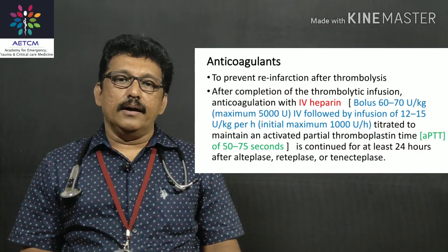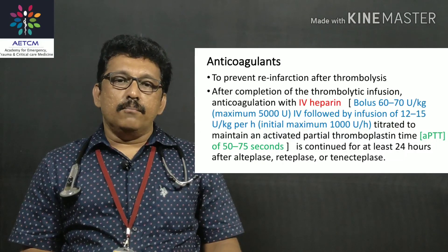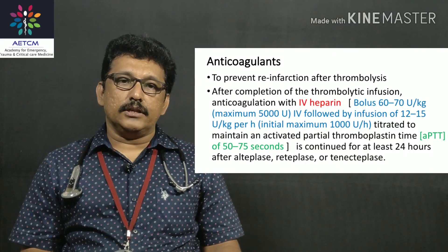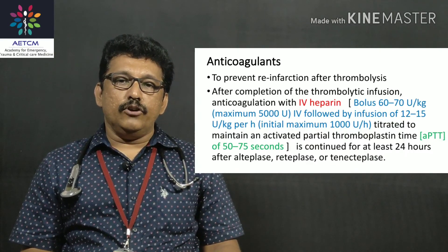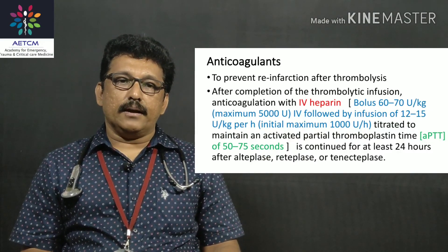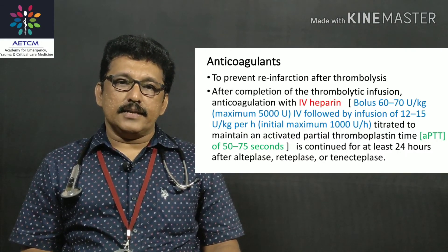Once the patient is stabilized in the ICU, give heparin to prevent propagation of thrombus and for DVT prophylaxis. The bolus dose of heparin is 60 to 70 units/kg, maximum 5000 units, followed by an infusion of 12 to 15 units/kg per hour, with an initial infusion rate of 1000 units/hour. Target an APTT of 50 to 70 seconds.